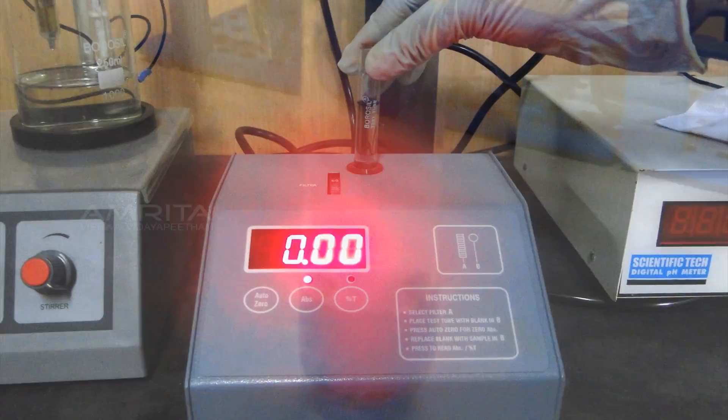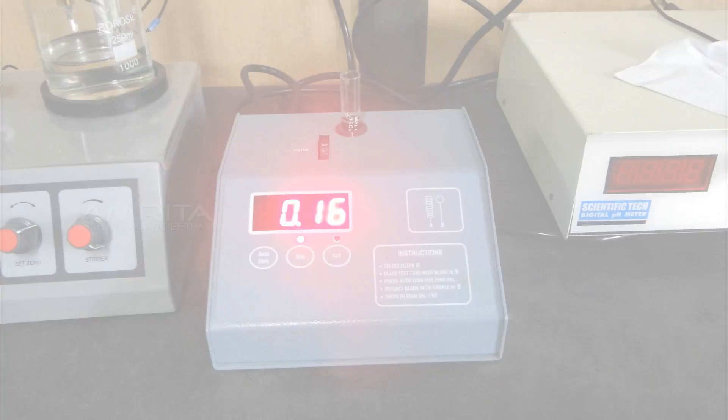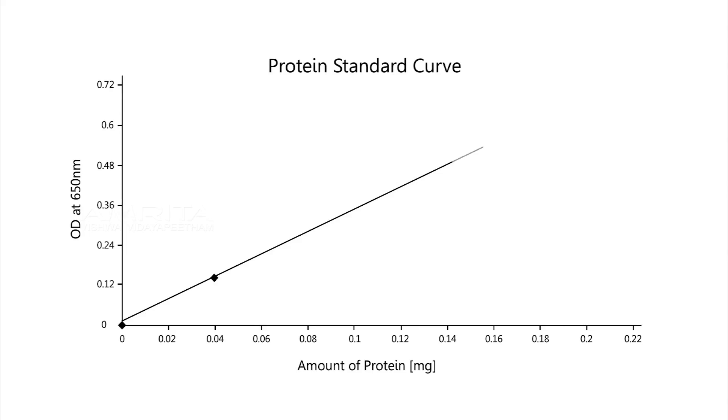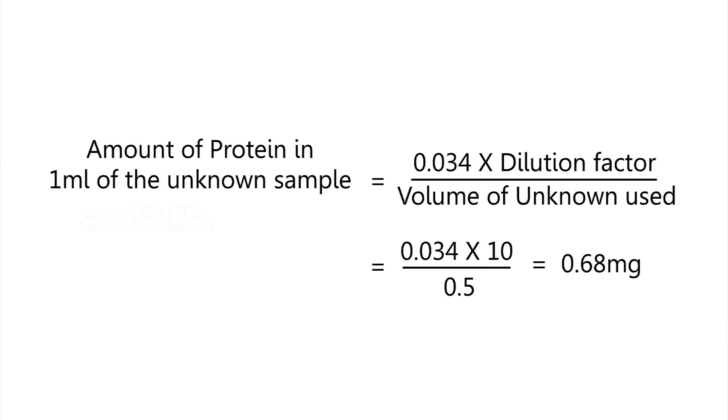Now record the absorbance of each solution at 650 nm using a colorimeter. Plot the absorbance against amount of protein in milligrams to get a standard calibration curve. Check the absorbance of unknown sample and determine the concentration of the unknown sample from the standard curve plotted.